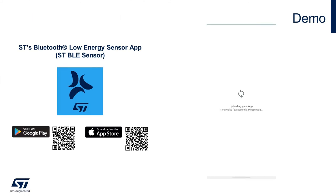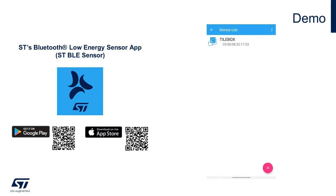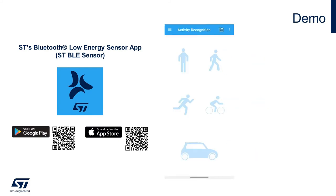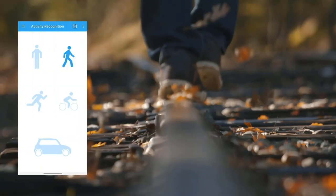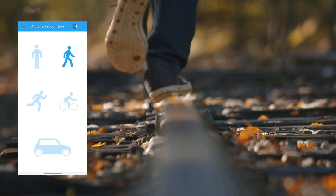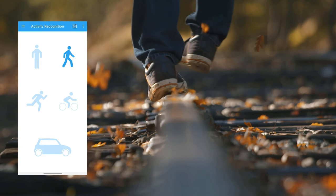From there, the STBLE Sensor App will load the example application into the SensorTile.Box hardware. A notification highlights that the app has been loaded successfully into the hardware. Now it's just a matter of connecting the SensorTile.Box to the STBLE Sensor App for real-time testing. Let's start with the standing still activity recognition — the hardware will identify the user standing still and highlight the relevant image. Then, if we start taking a walk, the algorithm will change the output and recognize that the user is actually walking.